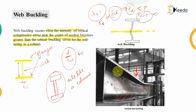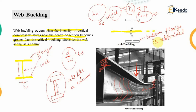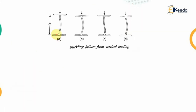Web buckling is influenced by the end restraint conditions. We always assume that in the case of web buckling, the bottom flange is completely restrained — meaning no lateral deflection and no rotation of the bottom flange is allowed. The top flange may have different conditions. According to different end conditions, the I-section will experience web buckling in different forms, giving different effective lengths. There are four such conditions.